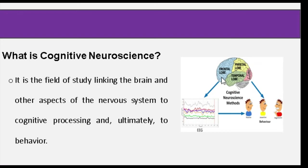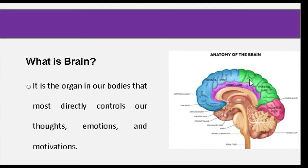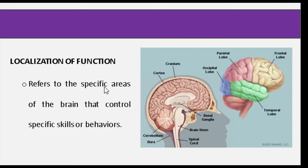On this picture, we have the frontal lobe, parietal, temporal, and occipital lobe. We're going to discuss each one and dissect what's inside of this brain. First, before we proceed, we have to identify what the brain is. It is the organ in our bodies that most directly controls our thoughts, emotions, and motivations. Whatever you are doing, it is responsible for what's happening inside your brain — how you act and how you react to a certain situation.